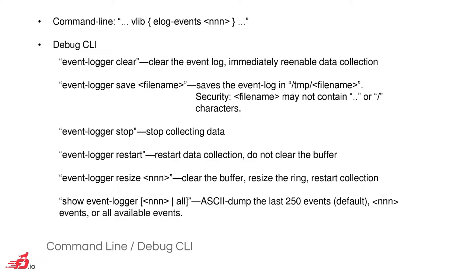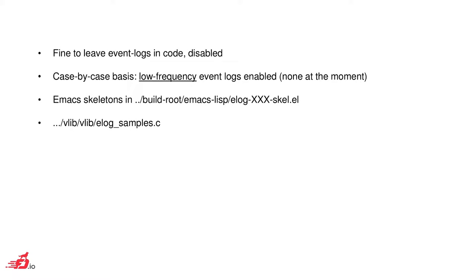Event-logger stop will stop collecting data; restart is pretty obvious. Resize nnn will clear the buffer, resize the ring, and restart the collector. There's a fairly crude ASCII dump utility you can use to show what's going on. It's fine to leave event logs in code disabled, and on a case-by-case basis low-frequency event logs can be enabled. There are really none turned on at the moment.